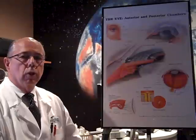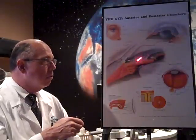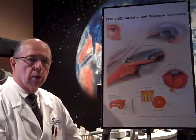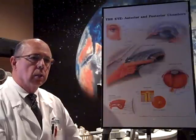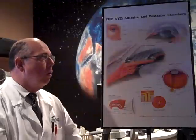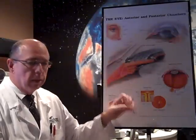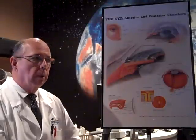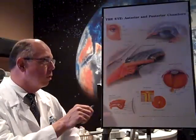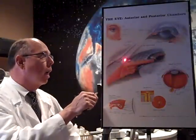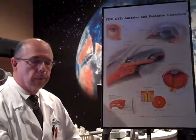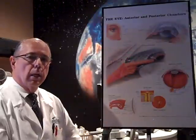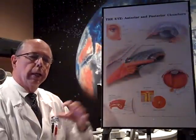Once we determine that you have glaucoma and the pressure has damaged the nerve — there's also a lesser form called normal pressure or low pressure glaucoma that we can discuss at a later date — then we have to decide on treatment. There are two or three different choices. One, there are medications that either slow down the production of fluid in your eye, or help the outflow of fluid out of your eye. We also have laser treatment, where we laser the area where the meshwork is, and that opens up those channels and lets the fluid drain out further.